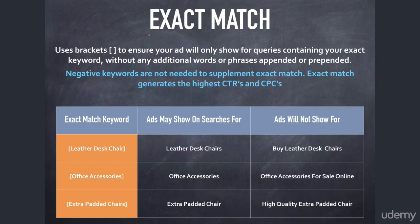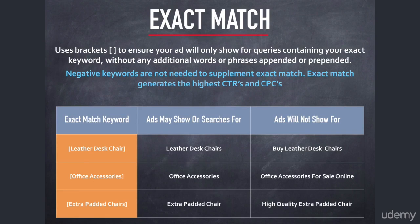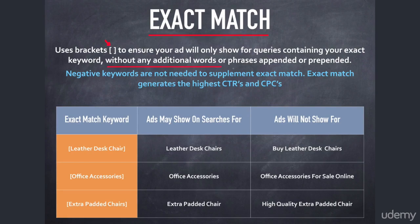If you have an account with some exact match keywords and some phrase match, broad match modified, and broad match keywords — as you should, using a mixture of all keyword match types — you obviously still need negative keywords for those other types. You don't need negative keywords to counterbalance exact match keywords specifically. Exact match uses brackets to ensure your ad only shows for queries containing your exact keyword, without any additional words appended or prepended.